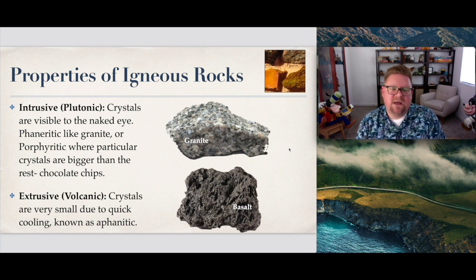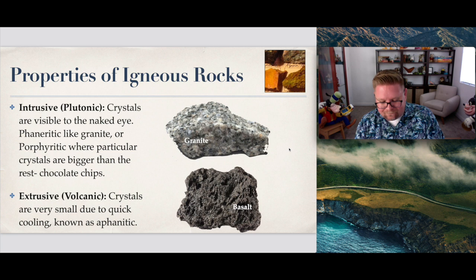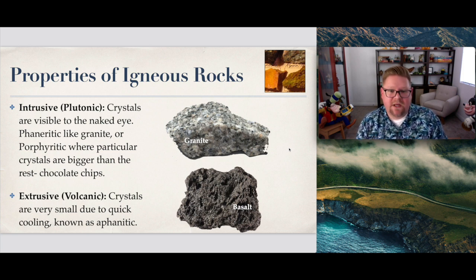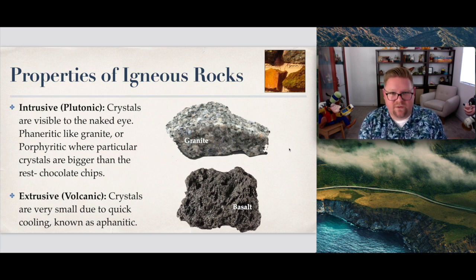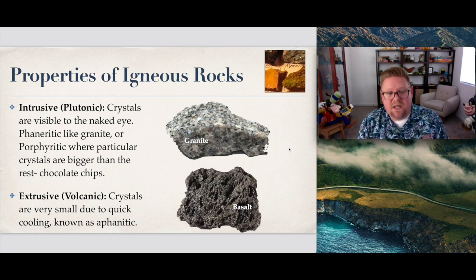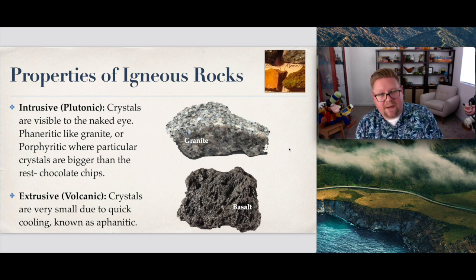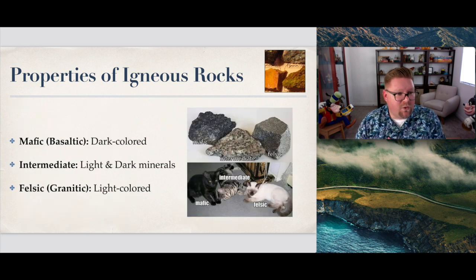Extrusive rocks, on the other hand, may not have grains at all. They may even have vesicles — essentially trapped air bubbles or channels where gases were trapped. Take this basalt at the bottom of the page; sometimes people call it lava rock, but it's technically a basalt. The crystals are very very small and may not even be present, but it may have other physical properties such as vesicles — vesicular basalt.